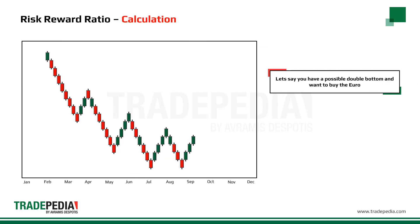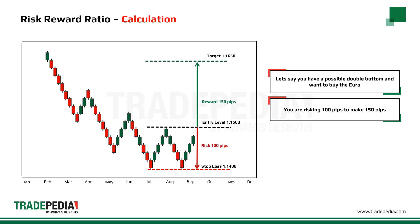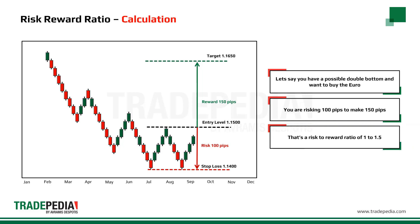Let's say you have a possible double bottom and want to buy the euro with the following parameters: entry level at 1.15, stop-loss level at 1.14, and take-profit level at 1.1650. You are risking 100 pips to make 150 pips. That's a risk-to-reward ratio of 1 to 1.5 — in other words, you are risking one unit in search of a potential reward 1.5 times the risk involved. The same would apply when buying any other asset.